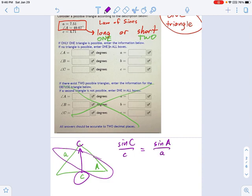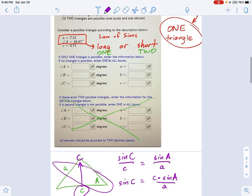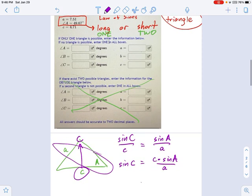Now, I'm looking for C. So I'm going to rearrange this and say sine of C equals side C times sine of A over little a. And those things I do know. I know that side C is 4.71. I know that sine of A is the sine of 49.67 degrees. That was given to me at the beginning of the problem, and I know that little a, the side, is 7.51.